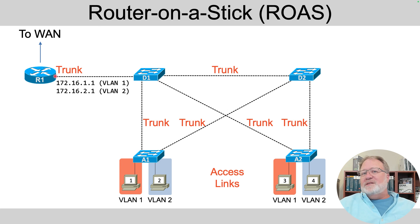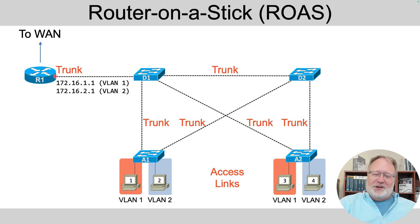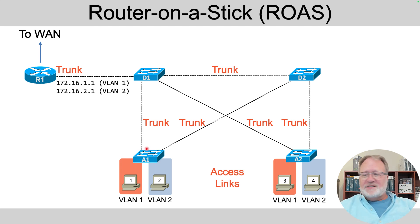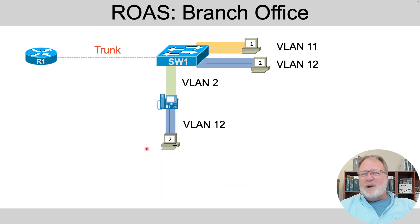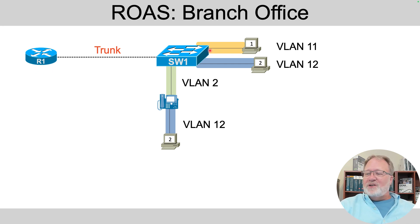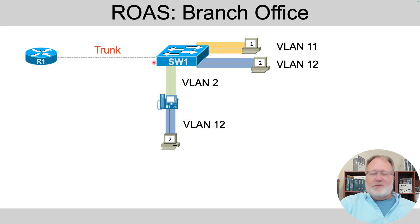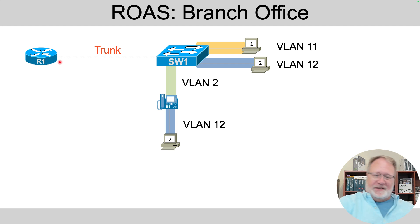Router on a stick was really the first feature Cisco added focused on routing between LAN-based subnets. Today you wouldn't really use it with a big campus distribution and access layer, but you might still see it in a branch office where it's just big enough to want a separate router and switch. Your switch might have enough ports to connect all the PCs, maybe some phones, support several VLANs, hook up one cable between the router and the switch, and use router on a stick to route into those subnets and out to the WAN.